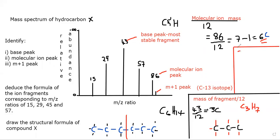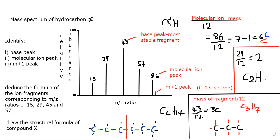29 divided by 12 gives you two point something, so ignore the decimal — it's just two. This fragment should have two carbons. If it were an alkane it would be C2H6, so the fragment has one less hydrogen: C2H5. Check: 2 times 12 is 24, plus 5 is 29. Correct.